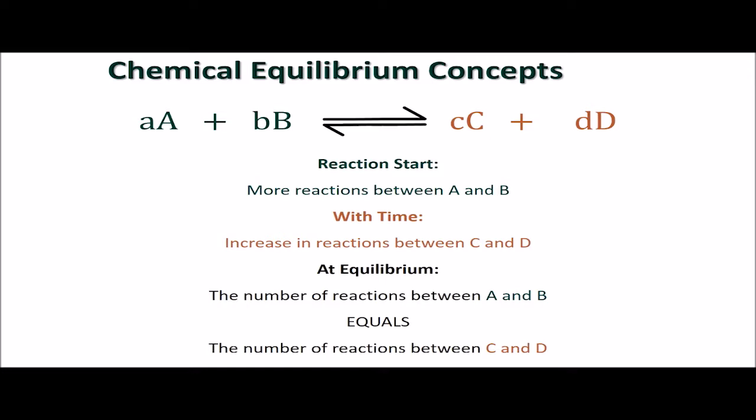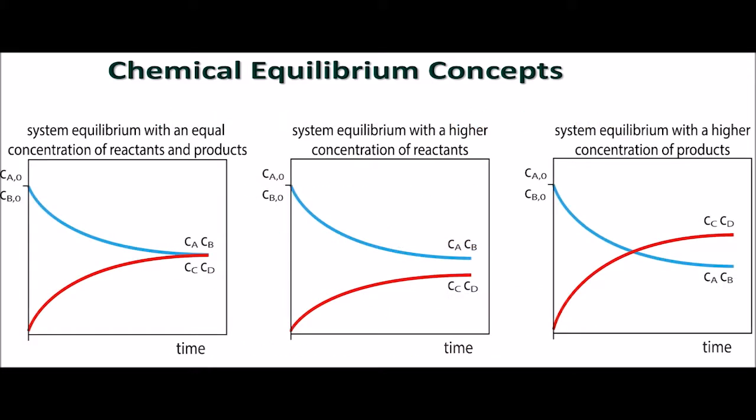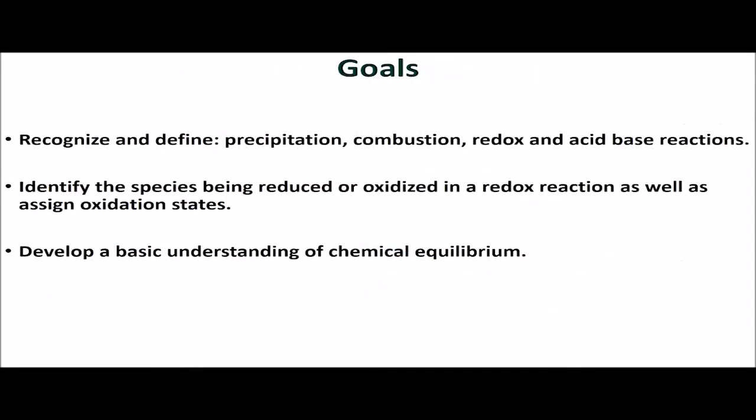When a reaction is in dynamic equilibrium, the concentrations of the products and reactants no longer change. This does not mean that the concentration of products and reactants are equal to each other, and it is important to recognize that at equilibrium the reaction has not stopped. The forward and reverse reactions are continually occurring at the same rate.